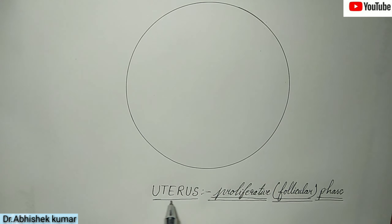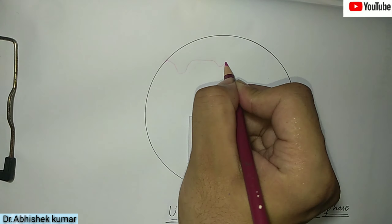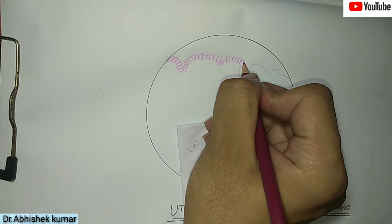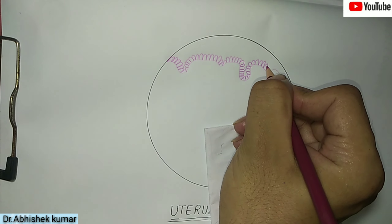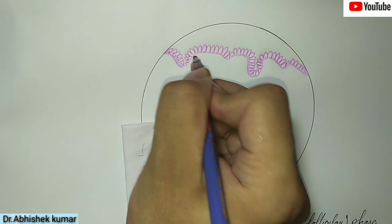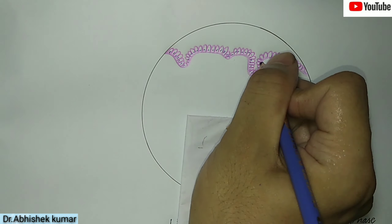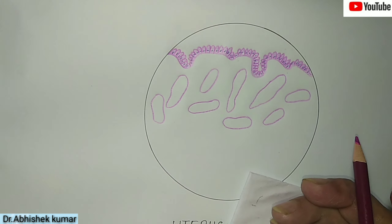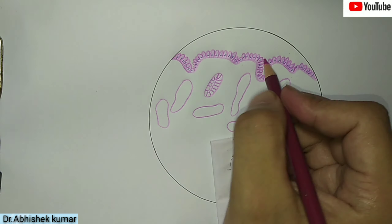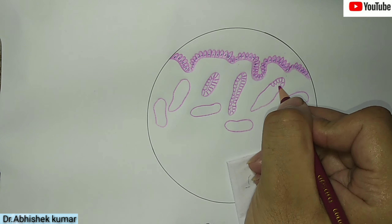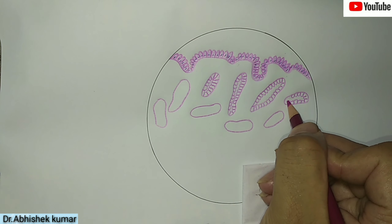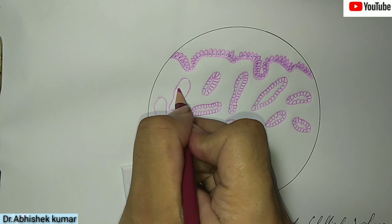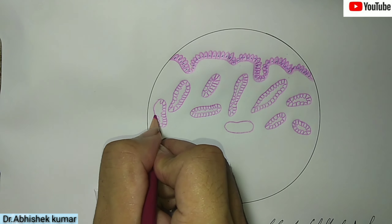Now we will see the proliferative or follicular phase of the uterine tube. Here you can see the surface of the endometrium, which is lined by simple columnar epithelium cells — this is the lining epithelium. Also present are uterine glands, lined by simple columnar epithelium cells.